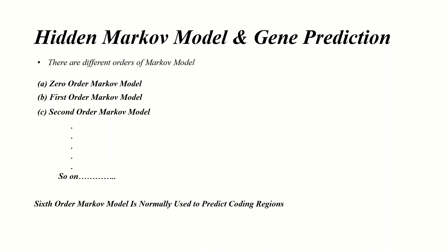Now which order of Markov model is used for the prediction of genes? It's the sixth order Markov model, which is used for the prediction of genes, because the occurrence of two genetic codons can be determined using a sixth order Markov model. The presence of two genetic codons anywhere in the genome cannot be by chance. In the practical tutorials you will learn to use FGenesB for prokaryotic gene predictions and FGenesH for eukaryotic gene prediction. Both of these programs are based on the hidden Markov model.